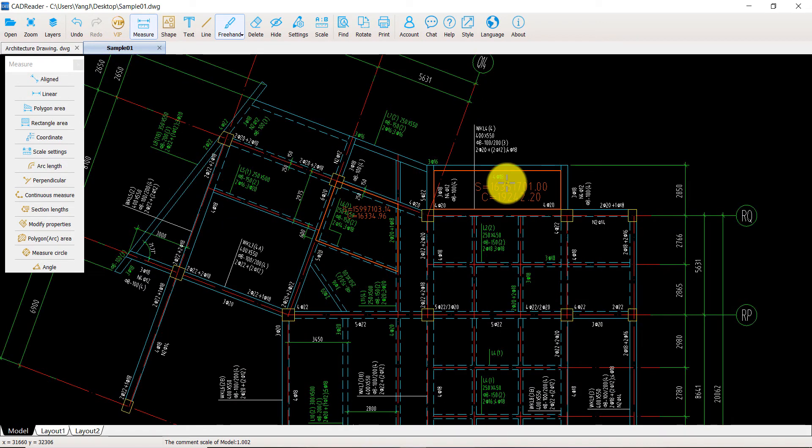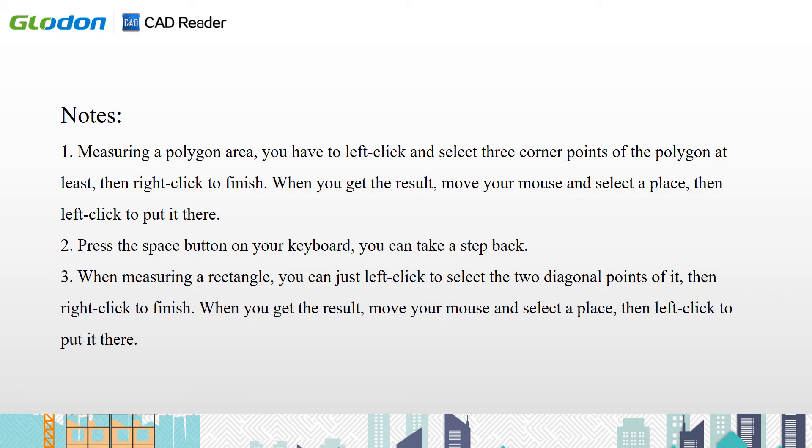Note: when measuring a polygon area, you have to left click and select at least three corner points of the polygon, then right click to finish. When you get the result, move your mouse and you can select a place to put it. Press the space button on your keyboard to take a step back.